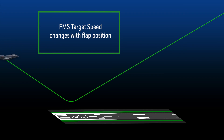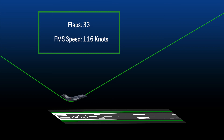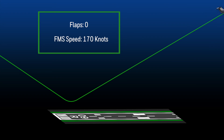In the event of a go-around, the FMS target speed also changes with flap position. During the initial go-around with flaps 33, the FMS target speed is 116 knots. As the flaps are retracted, the target speeds increase up to 170 knots with flap 0. As always, the pilot can select a manual speed at any time.